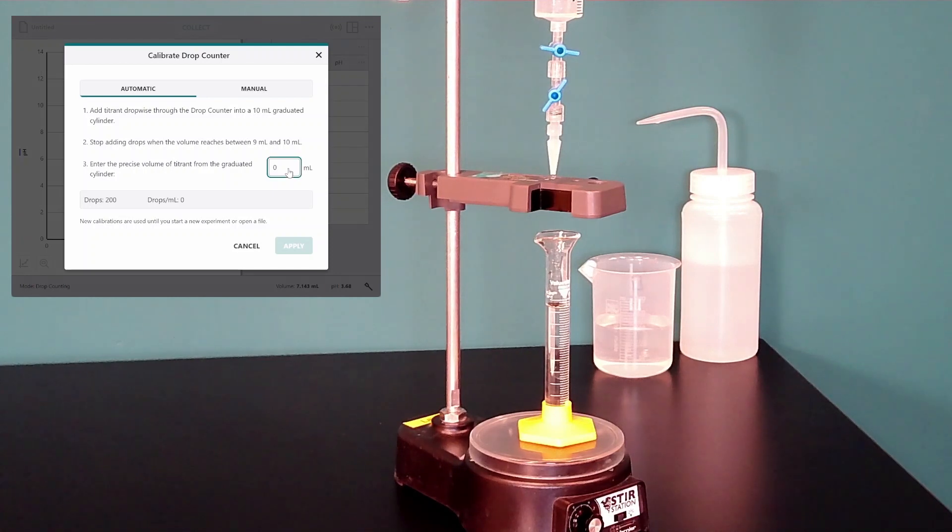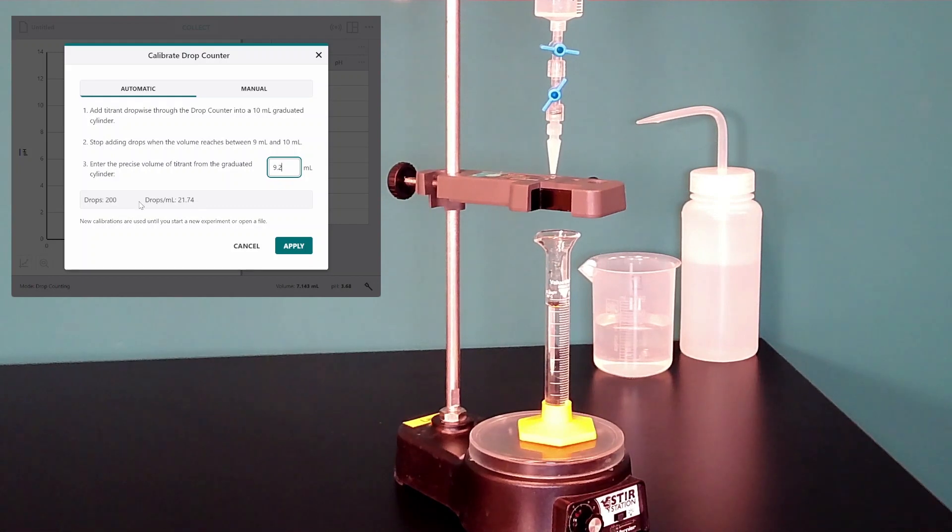So I'm going to type that in my software over here, 9.2, and that gives me a calibration of 21.74 drops per milliliter.